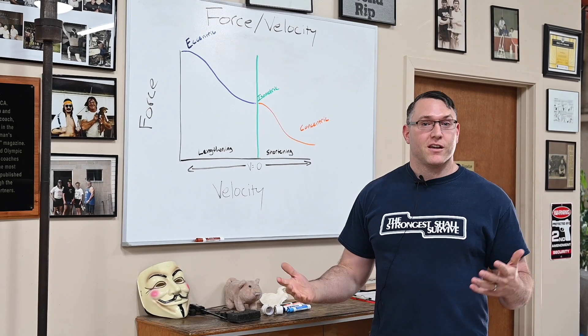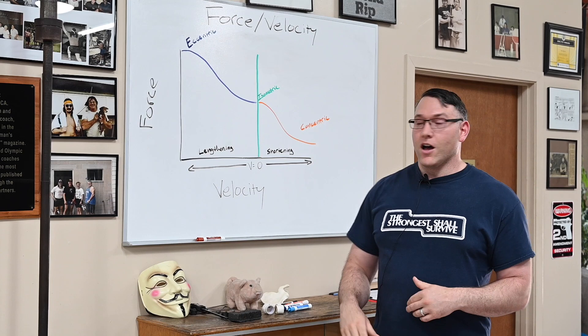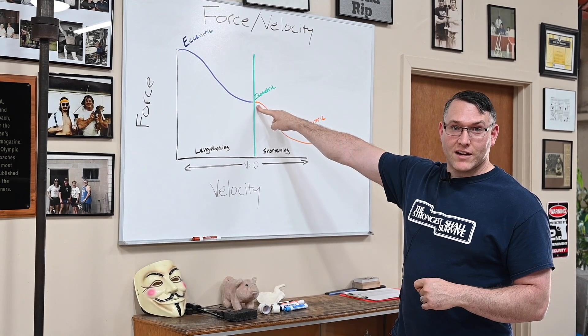This makes sense if you think about your Olympic lifts in comparison to your deadlift. A 1RM deadlift is going to move very slowly, we get a lot of force production out of that